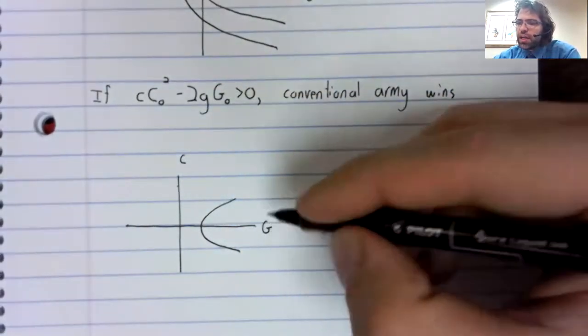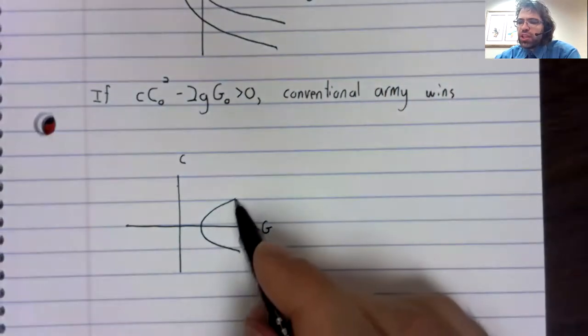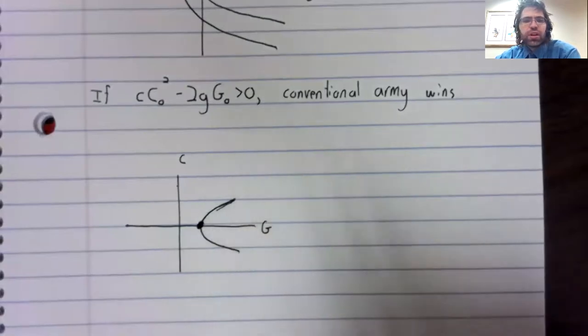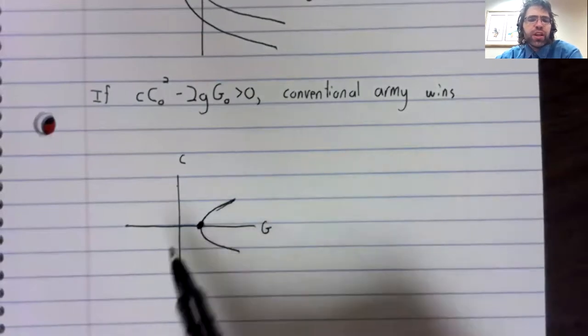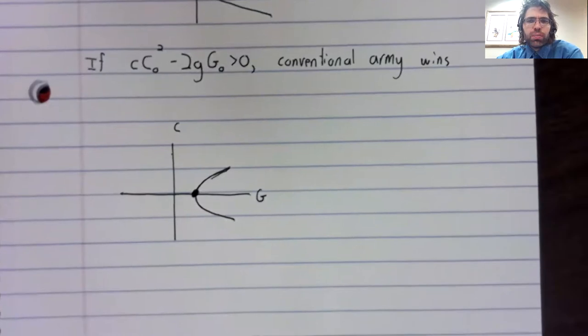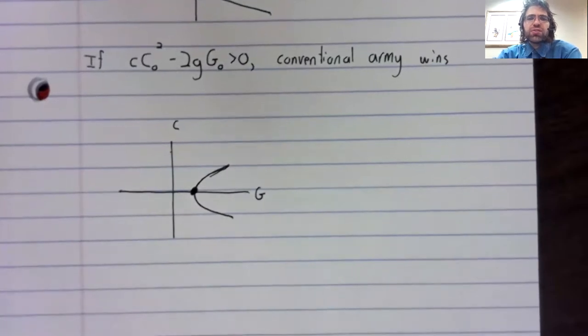Now, both C and G decrease. But when we come to this axis, the conventional army is wiped out, while the guerrilla army persists.